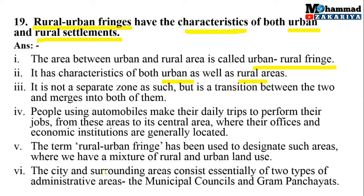Point number 6: The city and surrounding areas consist essentially of two types of administrative areas — the municipal council and gram panchayats. तो city के surrounding areas में दोनों तरह के administrative systems पाए जाते हैं। Municipal council urban area से related होता है और gram panchayat rural settlement में आती है। इस तरह से rural urban fringe has the characteristics of both urban and rural settlements.